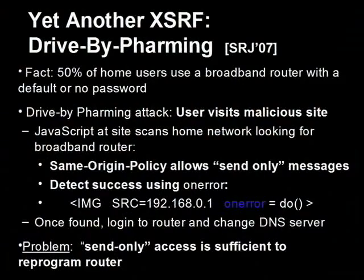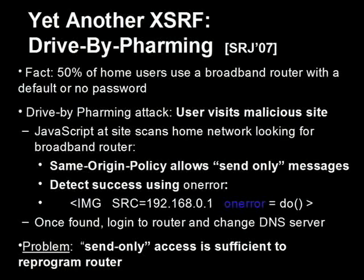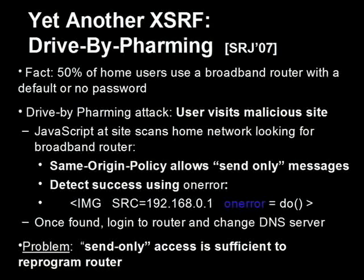Most home routers have a web-based interface to administer the router. The bad guys know that approximately 50% of home users use a broadband router and don't change the default username and password. The bad guy can take advantage of cross-site request forgery to mount an attack against the home router — changing the user's DNS settings by including an image source tag making a request to the router at 192.168.0.1 or whatever predictable addresses, basically sending a message saying 'please change the user's DNS settings to use the attacker's DNS server.'